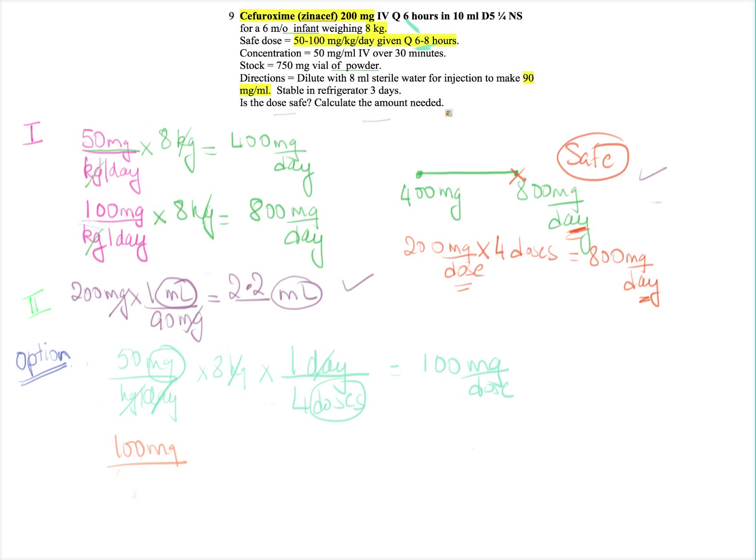Then you go ahead and do the same exact thing with the 100 milligrams upper range. You're going to need your patient's weight, and again you're going to say one day is four doses. This calculation should give you 200 milligrams per dose. Again, I love those number lines, so I'm going to go ahead and draw that to let myself know that I may give my patient 100 to 200 milligrams every single dose.